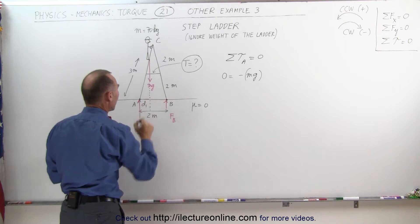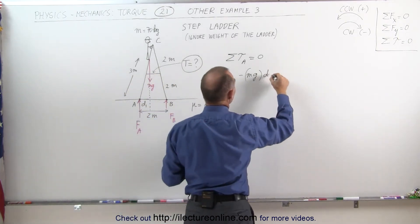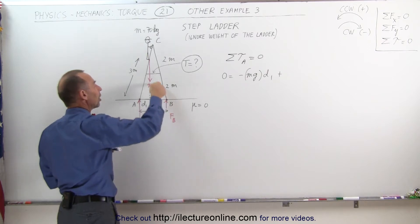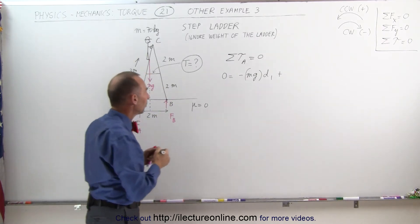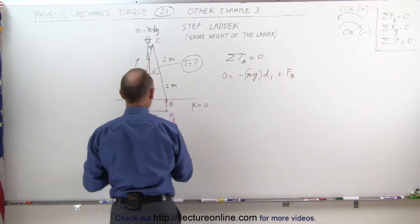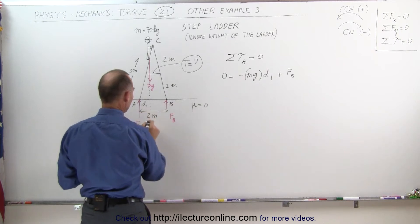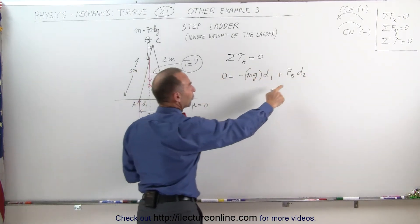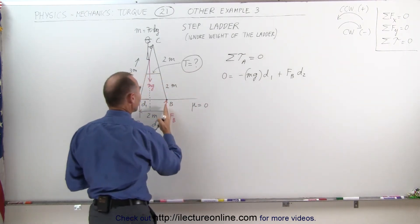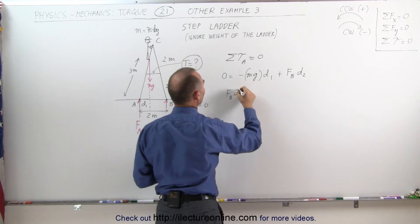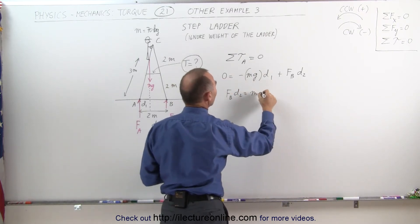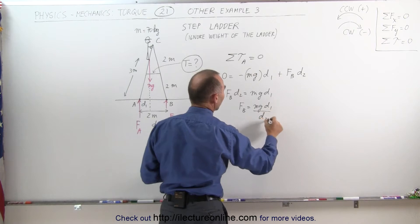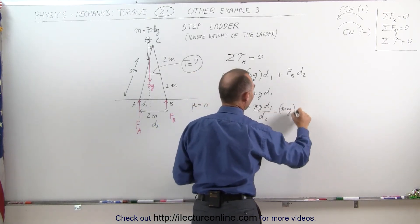That perpendicular distance is D1, and we'll determine what it equals in a moment. Plus, the reactionary force of the floor pushing back against the ladder at B would cause a positive counterclockwise torque — plus force at B times the perpendicular distance from the line of action of that force to the pivot point, which we call D2. Solving for F_B: F_B times D2 equals MG times D1, so F_B equals MG times D1 divided by D2 — the ratio of those two distances — equal to the weight of the person times D1.